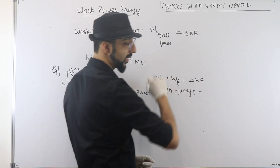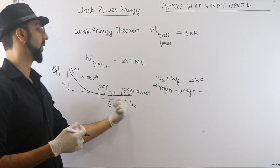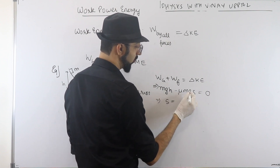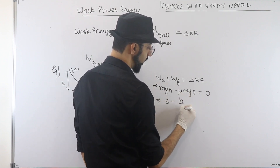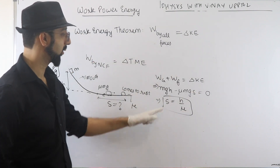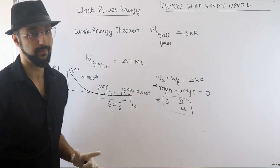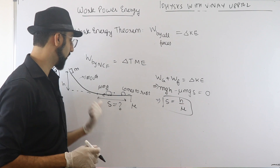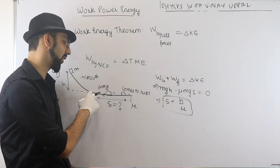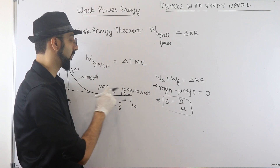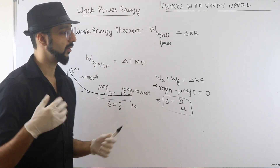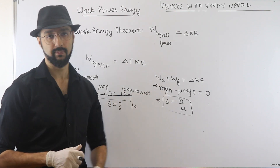You can see how the work-energy theorem allows us to write down and get the solution in one equation only. Otherwise, if you calculated the intermediate speed and used Newton's laws in two stages, there would be an extra equation. Not needed — we can just directly write this.